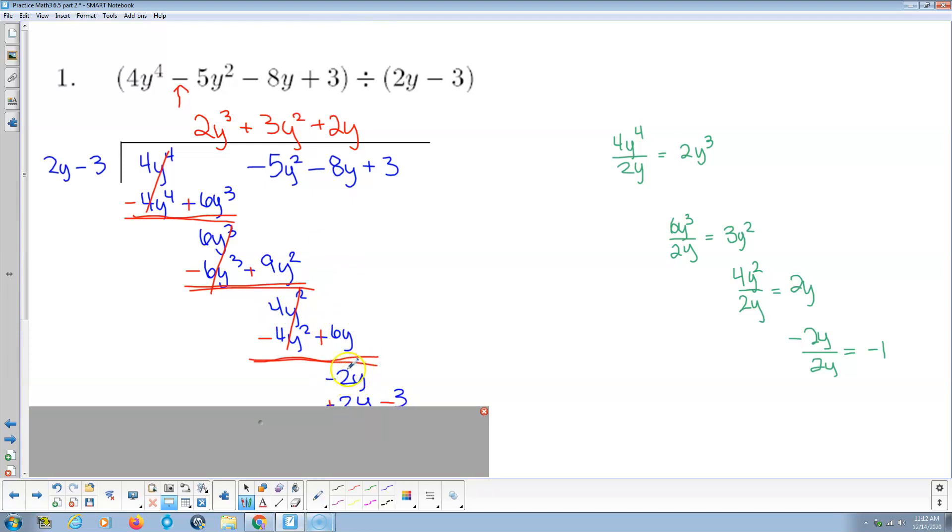So leading term divided by leading term, negative 2y divided by 2y, that's going to be negative 1. Multiply back, negative 1 times 2y is negative 2y, negative 1 times negative 3 is positive 3. We subtract, change the signs and add, which means the 2y's cancel. 3 and negative 3, those are opposites, they cancel as well. So the remainder is 0.